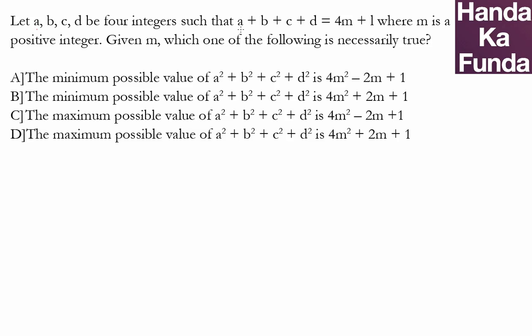Hello. In this particular question, we are given a, b, c, d are four integers which are adding up to be 4m plus 1, where m is a positive integer. Now we have to find out which of the following statements is true.